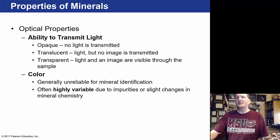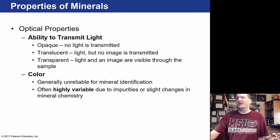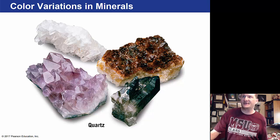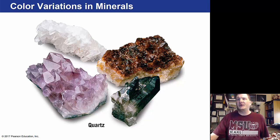Color is generally unreliable for mineral identification — it's highly variable due to impurities or slight changes in mineral chemistry. Here we have quartz in different samples, which also shows what we call cleavage — how it breaks off into knife-like appearances.